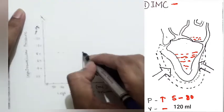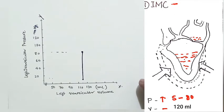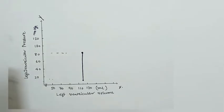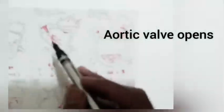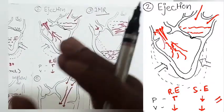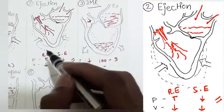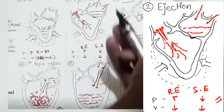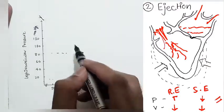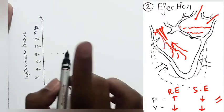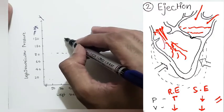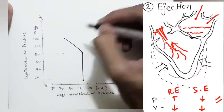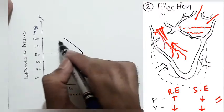When ventricular pressure surpasses aortic pressure, the aortic valve opens and blood is ejected — this is rapid ejection. During this phase, pressure continues to increase up to 120 mmHg, but volume is decreasing as blood is pumped out into the aorta.